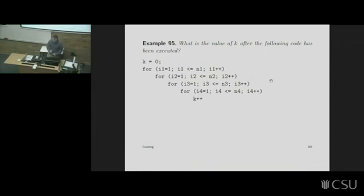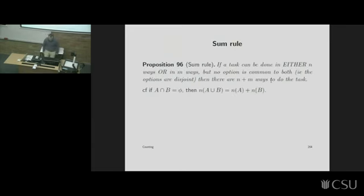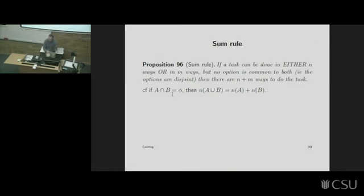So that's the multiplication rule: if you've got two independent things, just multiply the two numbers. You can also do sums. If you've got a task that can be done one way or another but they can't both happen — disjoint events, where A intersection B is the empty set — then if you've got n ways for the first and n for the second, you just add them together.